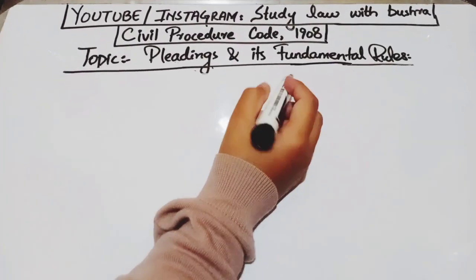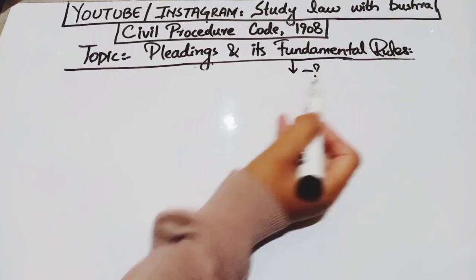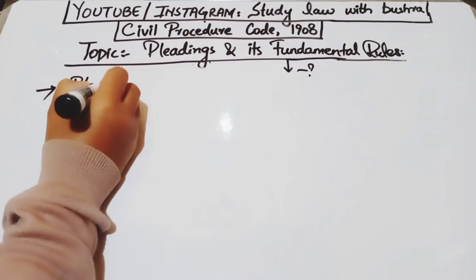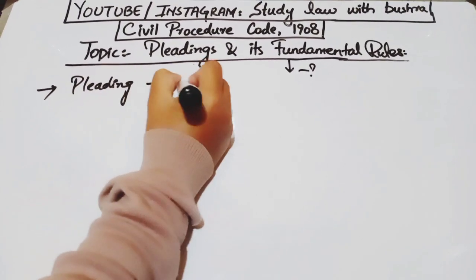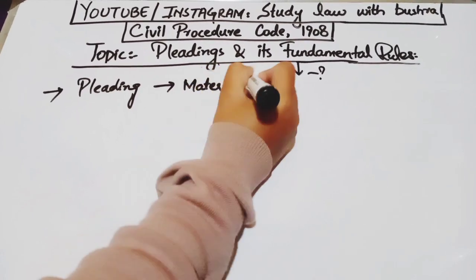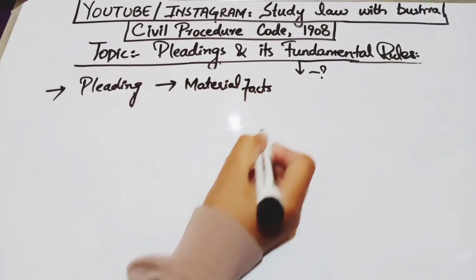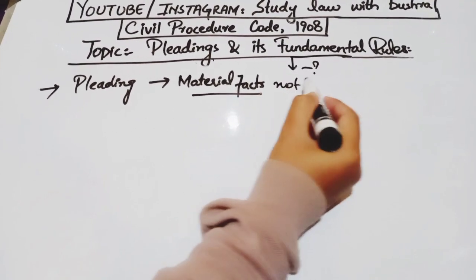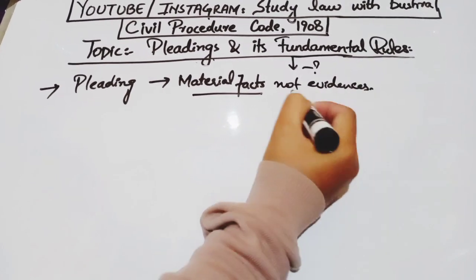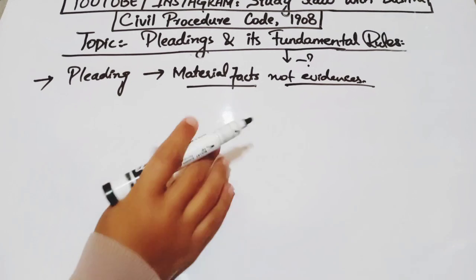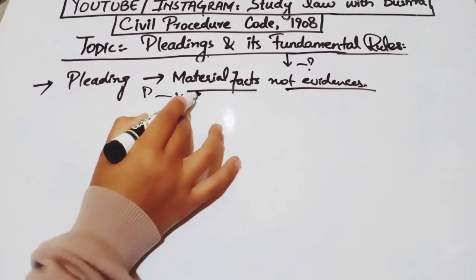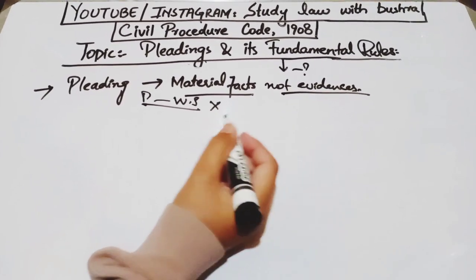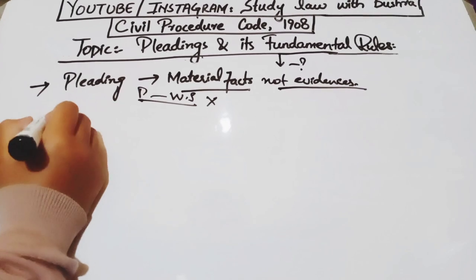Now we move to the second part of our topic — fundamental rules and general rules of pleading. The first rule is that every pleading must contain material facts. Every pleading must state the facts — only material facts. No evidence of any kind will be mentioned in it, and no law will be mentioned. That means you cannot say in your pleading 'according to such law' or 'according to such evidence.' Rather, in your plaint and written statement you must mention only relevant facts.